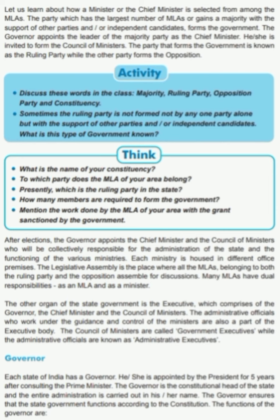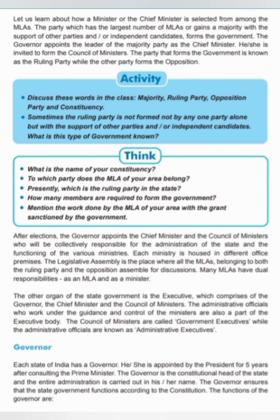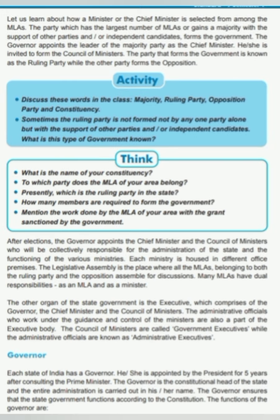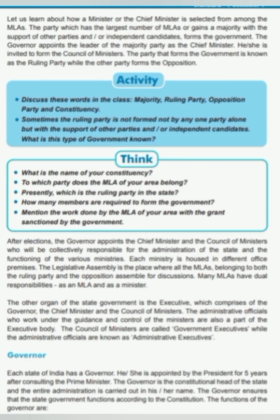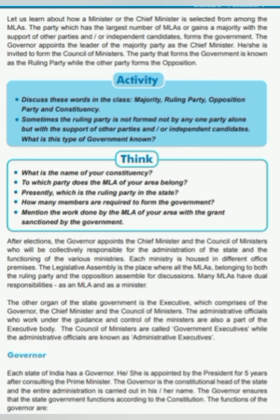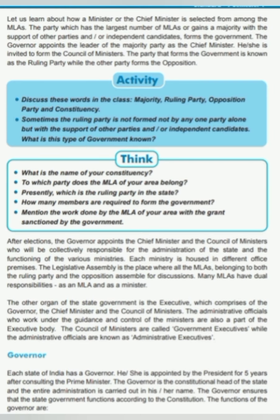Let us learn about how a Minister or the Chief Minister is selected from among the MLAs. The party which has the largest number of MLAs, or gains a majority with the support of other parties and/or independent candidates, forms the government. The Governor appoints the leader of the majority party as the Chief Minister and invites him or her to form the Council of Ministers. The party that forms the government is known as the ruling party, while the other party forms the opposition.